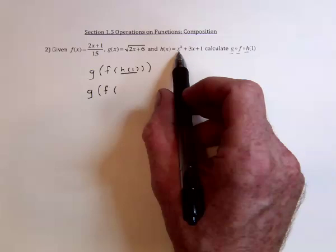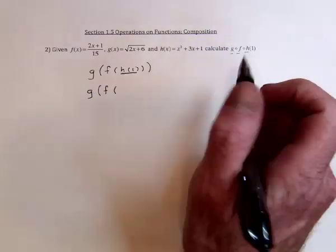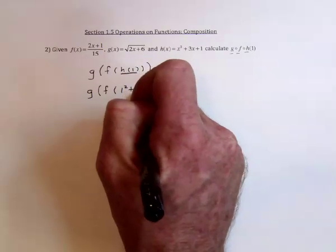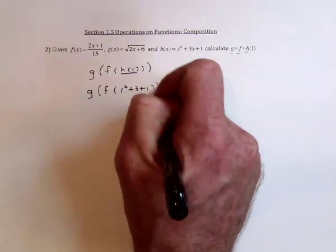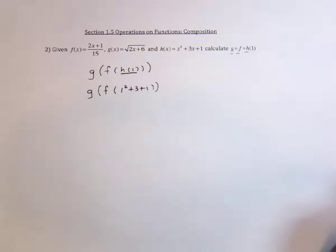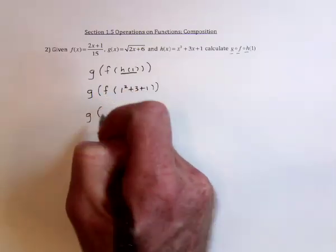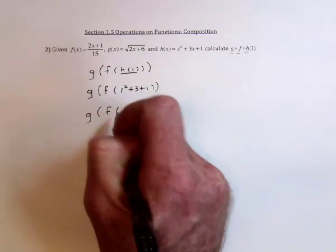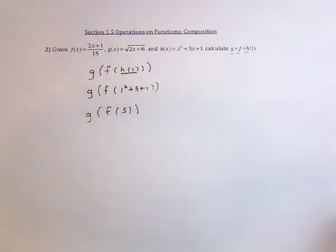So that's going to be 1 squared plus 3 plus 1, which is 5. So the next thing to do is substitute that 5 into the f function.